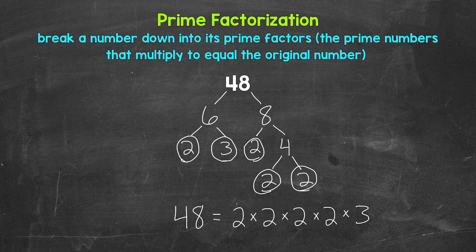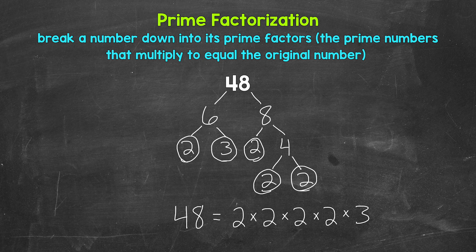And if we have the correct prime numbers, we can multiply them and they will equal the original number. So let's check here. 2 times 2 is 4, times 2 is 8, times 2 is 16, times 3 is 48. So we are correct here.